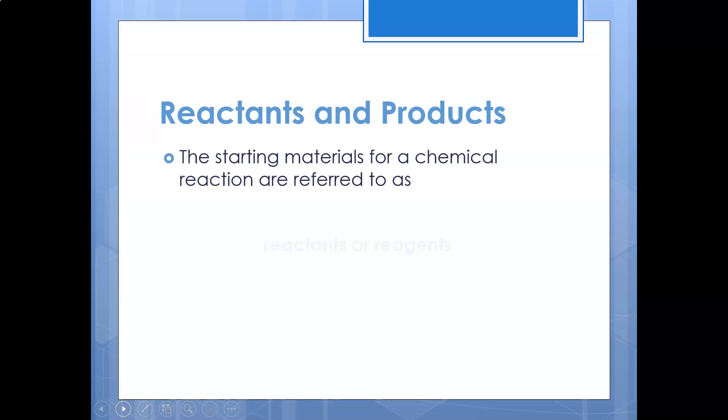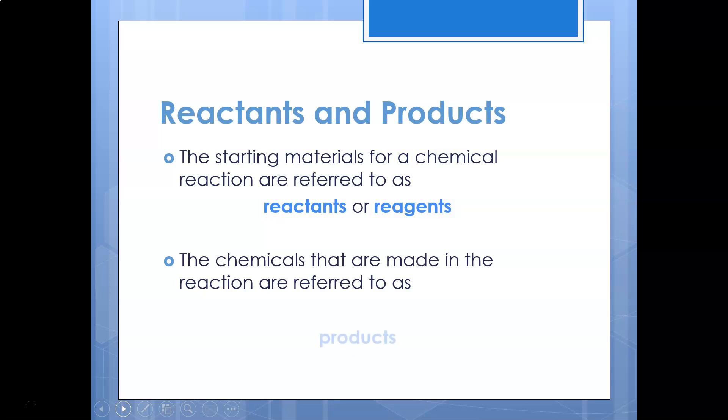As I've already said, the reactants are the things that are to the left of the arrow. They're the initial substances that react together to form the products. Reactants can sometimes be reagents and what is made, the outcome of that reaction, is what we call our products.